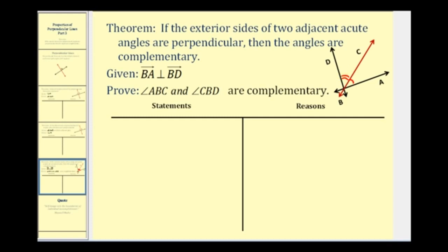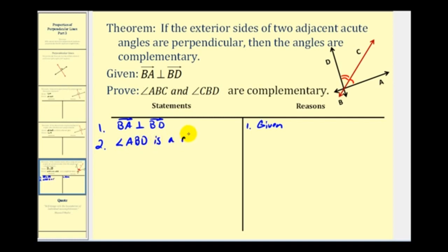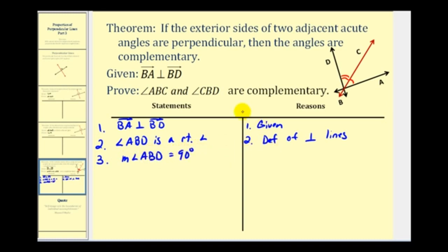Let's write this out. Step one will be the given: ray BA is perpendicular to ray BD. So if these two rays are perpendicular, angle ABD must be a right angle, by definition of perpendicular lines. This tells us that the measure of angle ABD equals 90 degrees, by definition of a right angle.